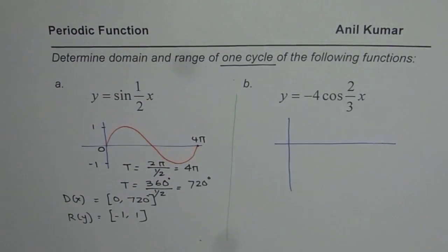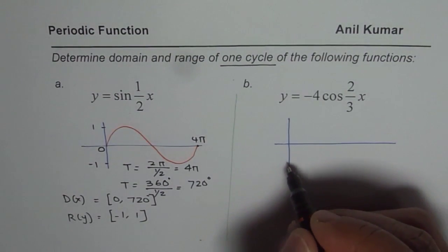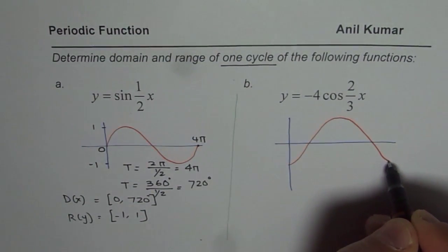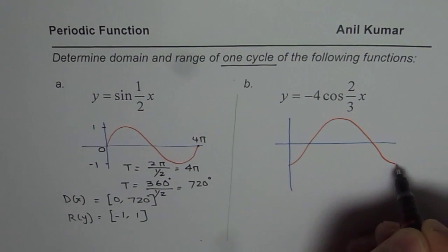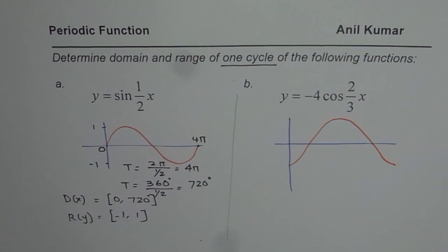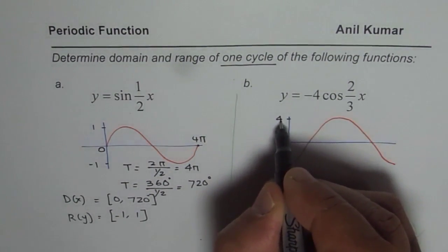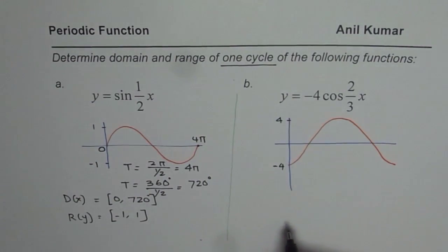Cosine function starts with maximum, but here it is minus, so it will start from the minimum. So we have a function which is kind of like this. That is one cycle; it repeats thereafter. Now in this particular cycle, what is the maximum and minimum value? It is 4, so 4 is maximum and minus 4 is the minimum value.